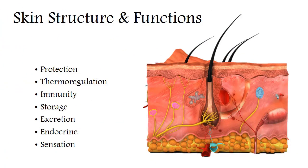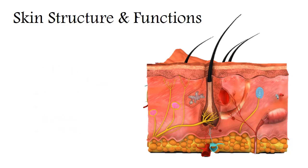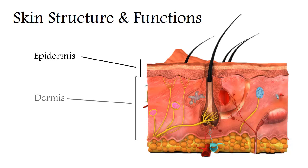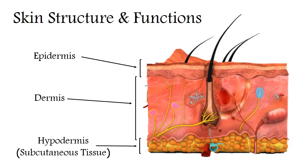The skin has many important functions and this determines its complex structure. It has three main layers. The outermost layer is the epidermis, underneath it lies the dermis, and the deepest third layer is the hypodermis or subcutaneous tissue. In anatomy the hypodermis is always considered as a part of the skin, and therefore we will also consider the skin as an organ consisting of three layers.